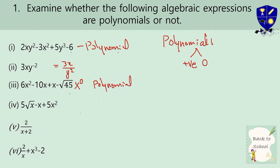The second expression was not a polynomial, so write: not a polynomial. Now look at the fourth one. There is a difference — in question 3 we had a root of a number (root 45), but here there is a root of a variable. That means it cannot be a polynomial, because it becomes x to the power 1/2, which is a fraction power. This is not a polynomial.